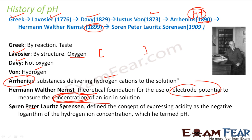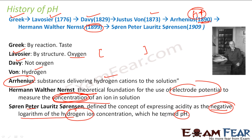Then Peter came. He defined the concept of expressing acidity as the negative logarithm of hydrogen ions. By then, scientists knew what hydrogen ions were and had a way to measure their concentration. So Peter said: acidity is defined by this term pH, and it is nothing but the negative of the logarithm of hydrogen ions. Why he took the negative, we don't know — we just know that this became the standard.